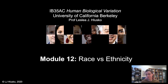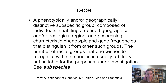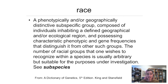The dictionary is a good place to begin, so let's look up the word race. According to the fifth edition of the Dictionary of Genetics, race is a phenotypically and/or geographically distinctive subspecific group composed of individuals inhabiting a defined geographical and/or ecological region and possessing characteristic phenotypic and gene frequencies that distinguish it from other such species. The number of racial groups one wishes to recognize within a species is usually arbitrary, but suitable for the purposes under investigation. See subspecies.